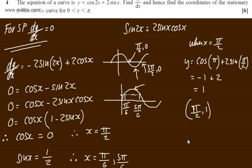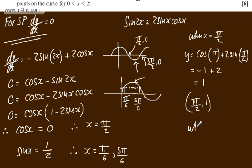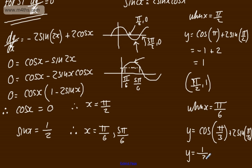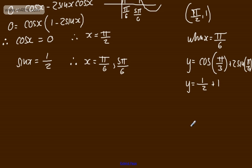When x = π/6, y = cos(2 × π/6) + 2sin(π/6) = cos(π/3) + 2sin(π/6). Using special angles, cos(π/3) = 1/2 and sin(π/6) = 1/2, so y = 1/2 + 2(1/2) = 1/2 + 1 = 3/2. This gives the coordinate (π/6, 3/2).